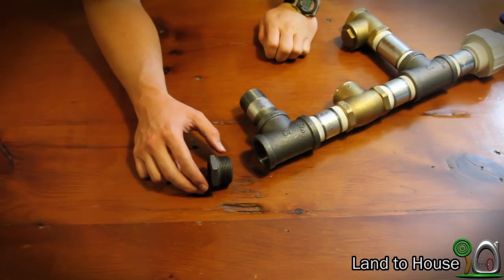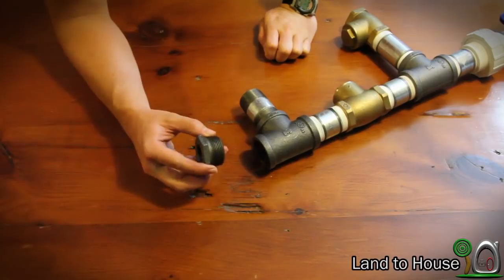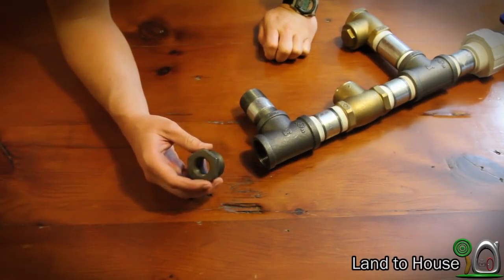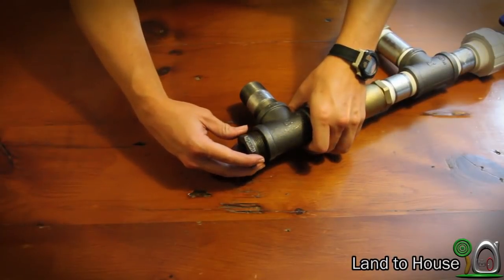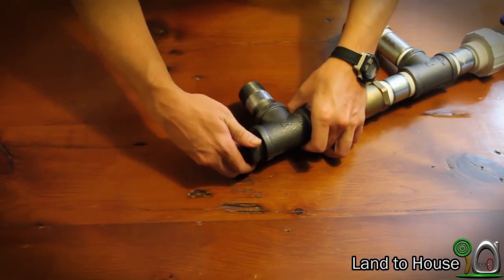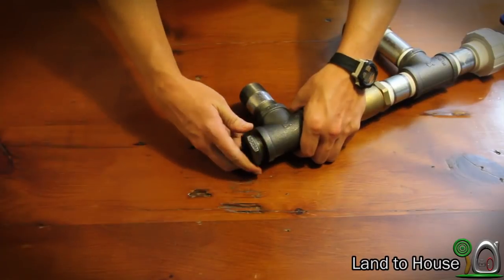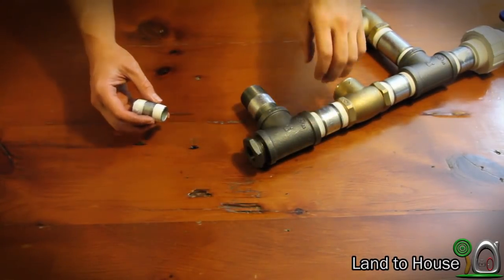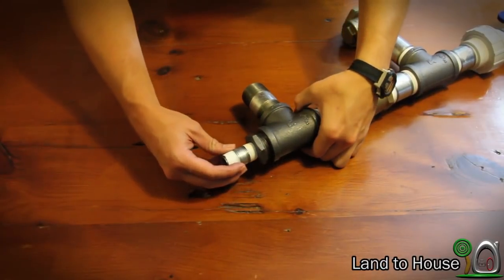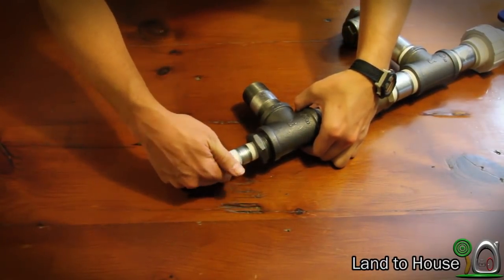For step 17, take your 1 and a fourth to 3 fourths bushing and screw that into the other end of your threaded T. Again, make sure these pieces have Teflon tape on them. Step 18, take a 3 fourths inch pipe nipple and screw that into your threaded bushing.